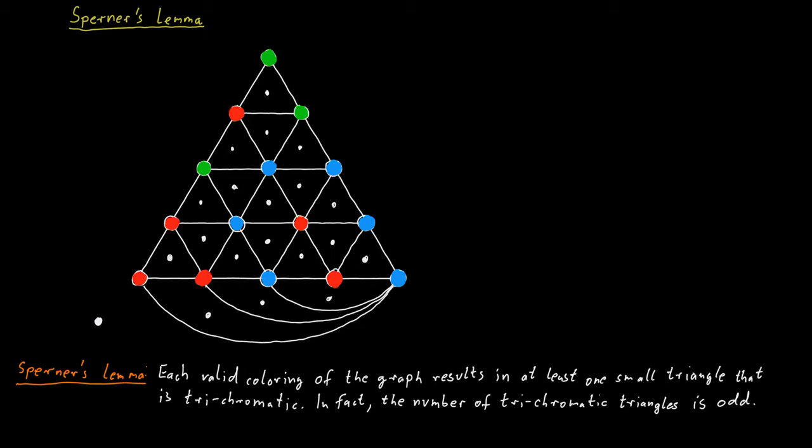We now define a graph on these new nodes that correspond to these cells. And two of these nodes are connected if their two cells share a red-blue edge.